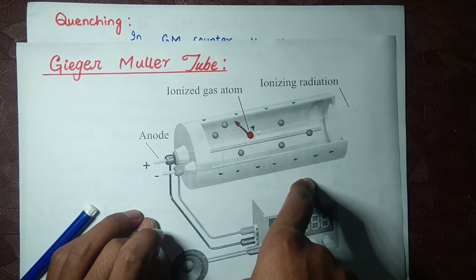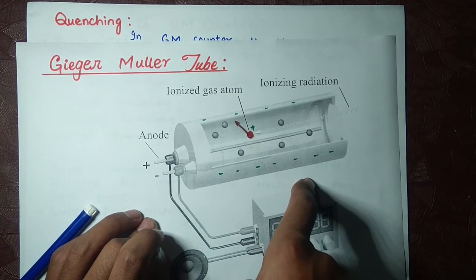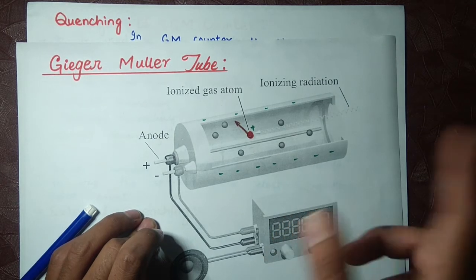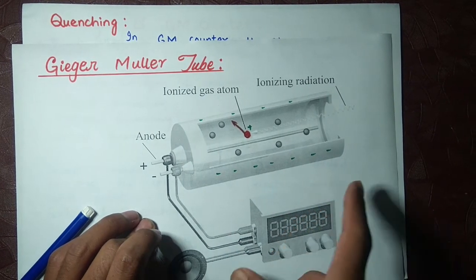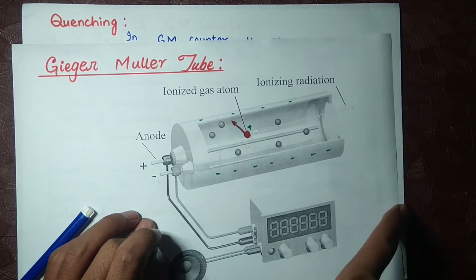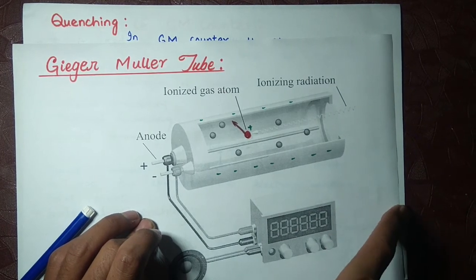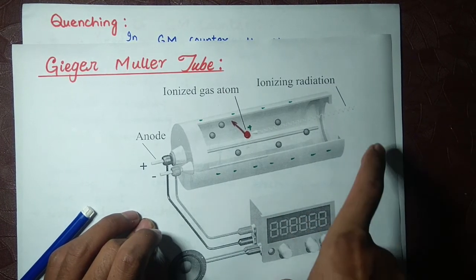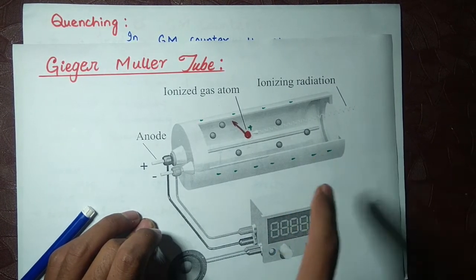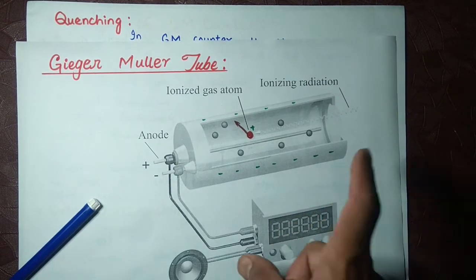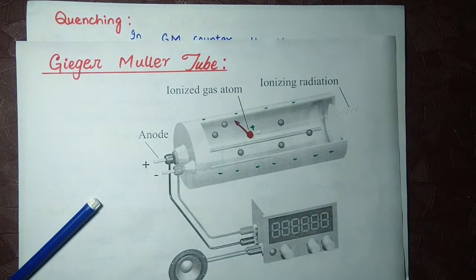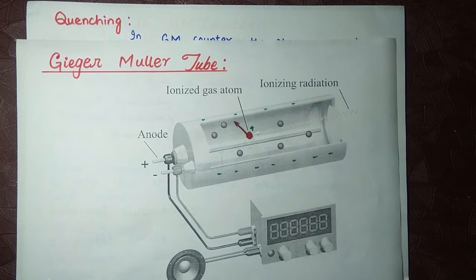We use halogen if we are using non-organic quenching gas, or we use ethanol, butanol, or alcohol if we are using organic quenching. You might now understand what quenching is.